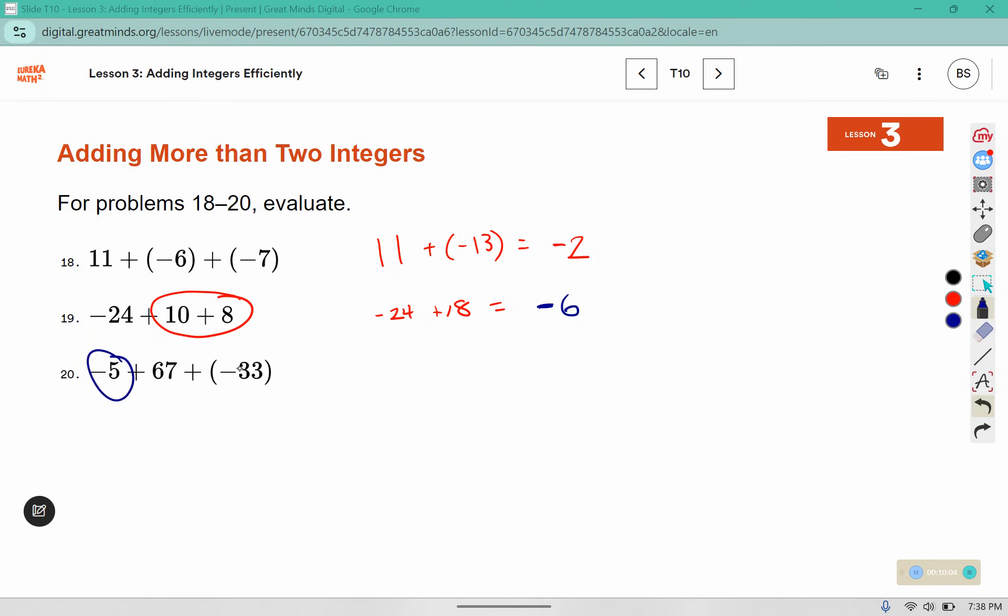Let's combine the ones that have the same signs here. Negative 5 and negative 33 makes negative 38 plus 67. The 67 has the longer arrow, or the greater absolute value, so our answer for this one will be positive. But the difference between 67 and 38 will show us how much is left when we go back and forth on that arrow. 67 minus 38: 7 minus 8 is negative 1 plus 3 is 2, so 29 and it is positive.